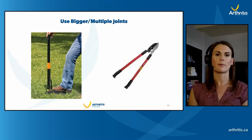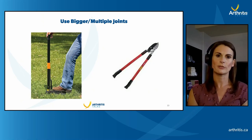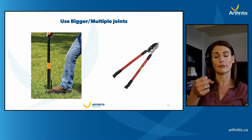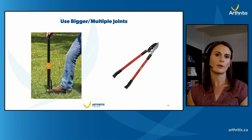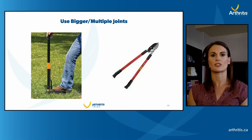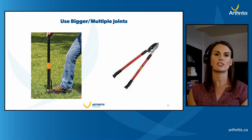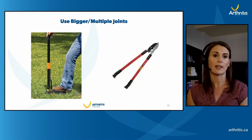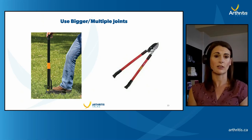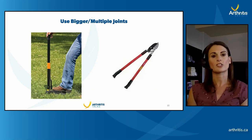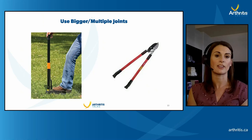Think about doing things using bigger or multiple joints. Pruning shears require a lot of gripping force through the hand. If that's not comfortable, consider using a lopper — often thought of for higher or thicker branches, but usable for smaller items too — so you're using more of your chest and shoulder muscles instead of the small joints in your hands. An upright weeder, as opposed to being down on hands and knees with a small device, allows you to use your body weight to press down on a pedal, pull the weed out, and dump it in a bucket — better posture and a lot less risk of injury.